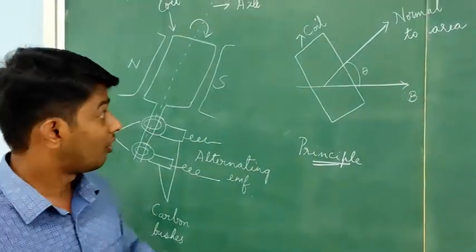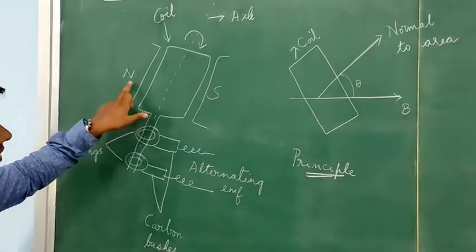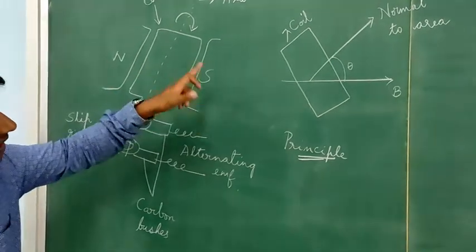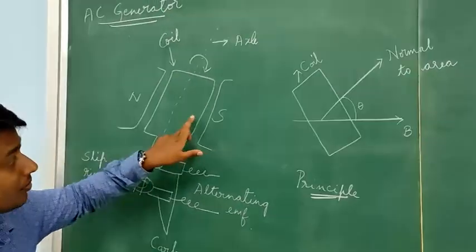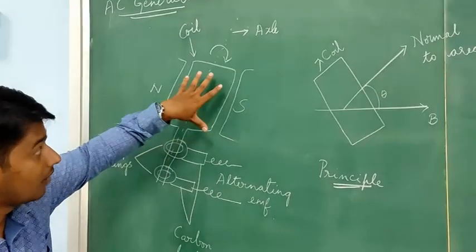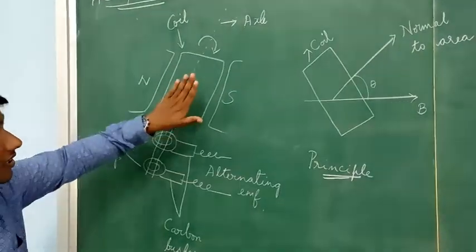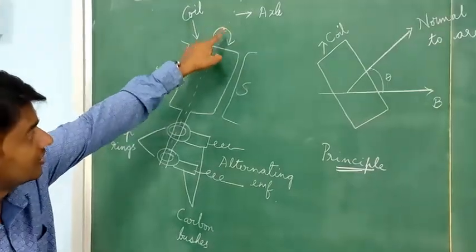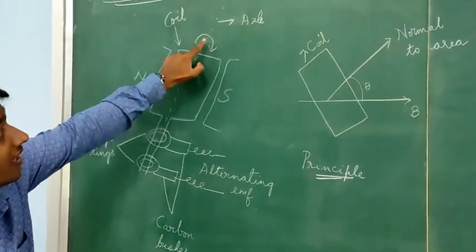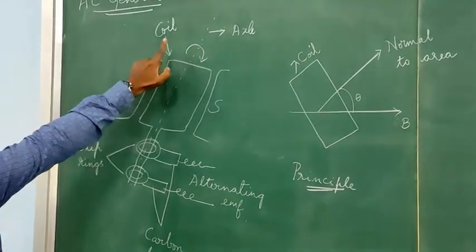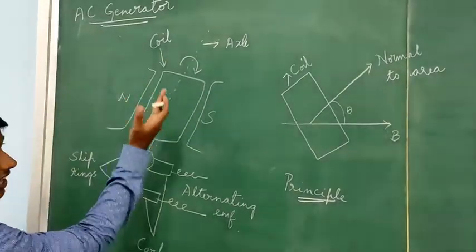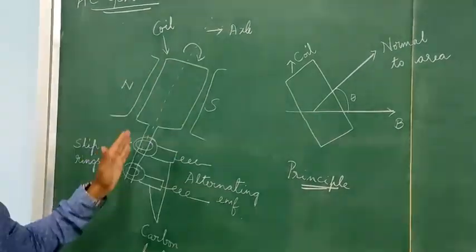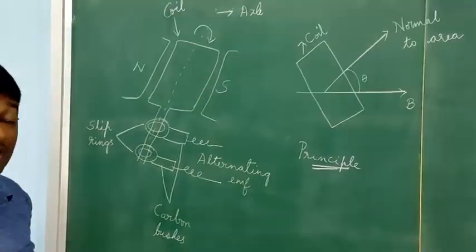The AC generator consists of two magnets: the north pole of one magnet faces the coil and the south pole of another magnet faces the coil, with only one coil present. The coil is made to rotate in the clockwise direction. As the coil rotates in the presence of the magnetic field, the area of the coil changes. At 0 degrees, 90 degrees, and 180 degrees, the effective area intercepting the magnetic field keeps changing.